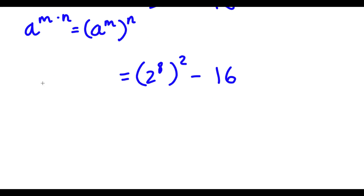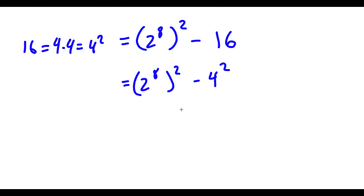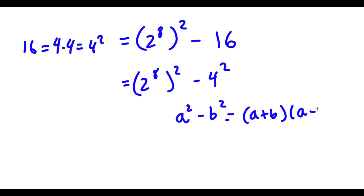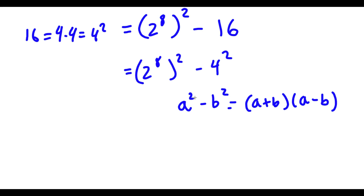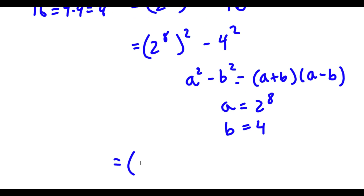Now I have this minus 16. Now 16 is the same thing as 4 squared, so I have 2 to the power of 8, to the power of 2, minus 4 squared. If I have something in the form a squared minus b squared, this equals (a plus b) times (a minus b). So in this case a equals 2 to the power of 8 and b equals 4, giving me (2^8 + 4) times (2^8 - 4).